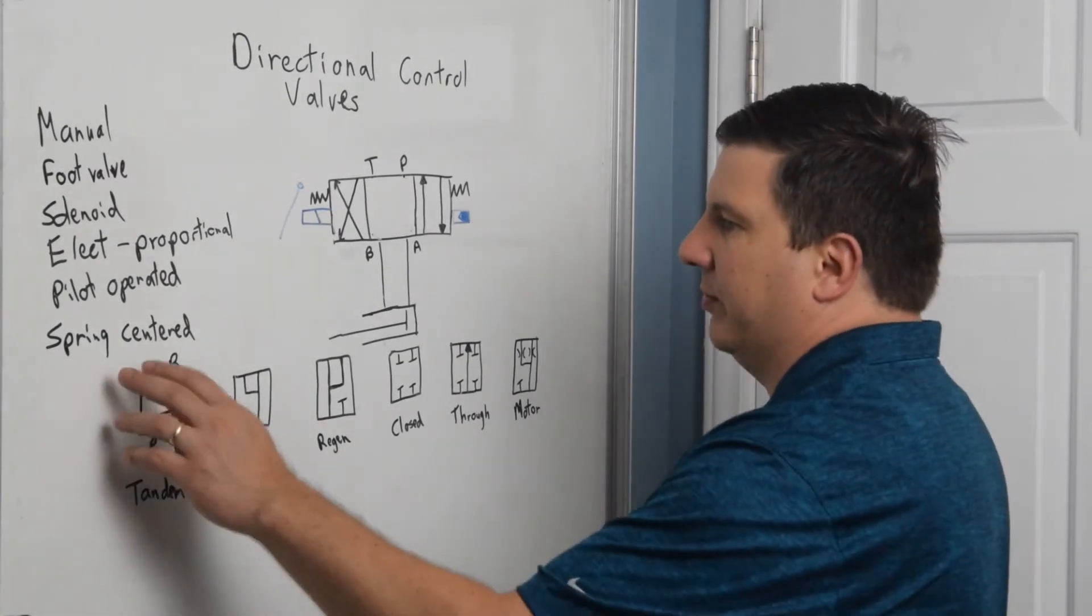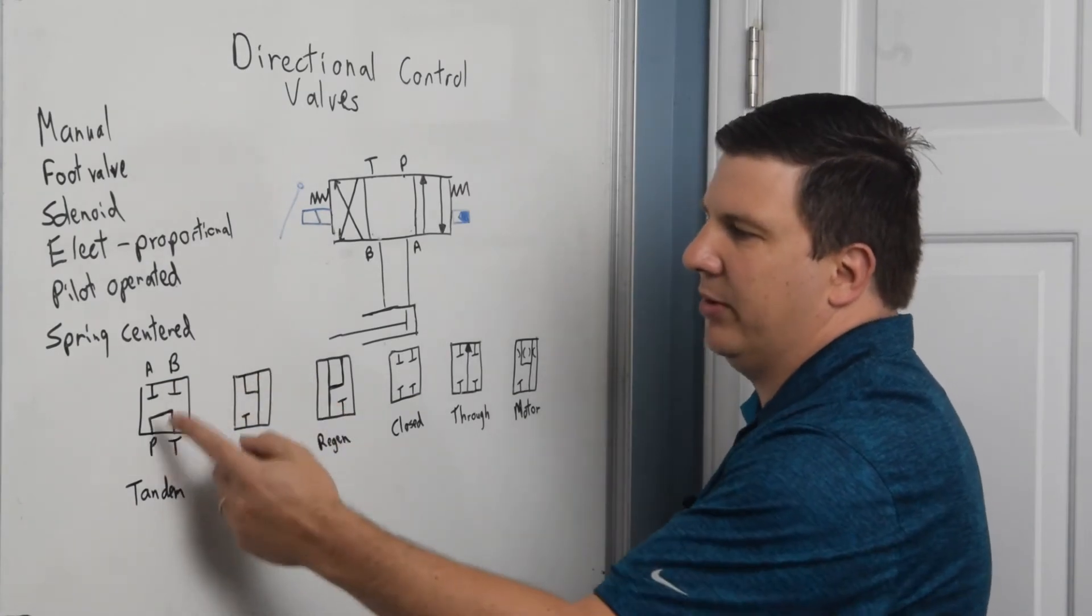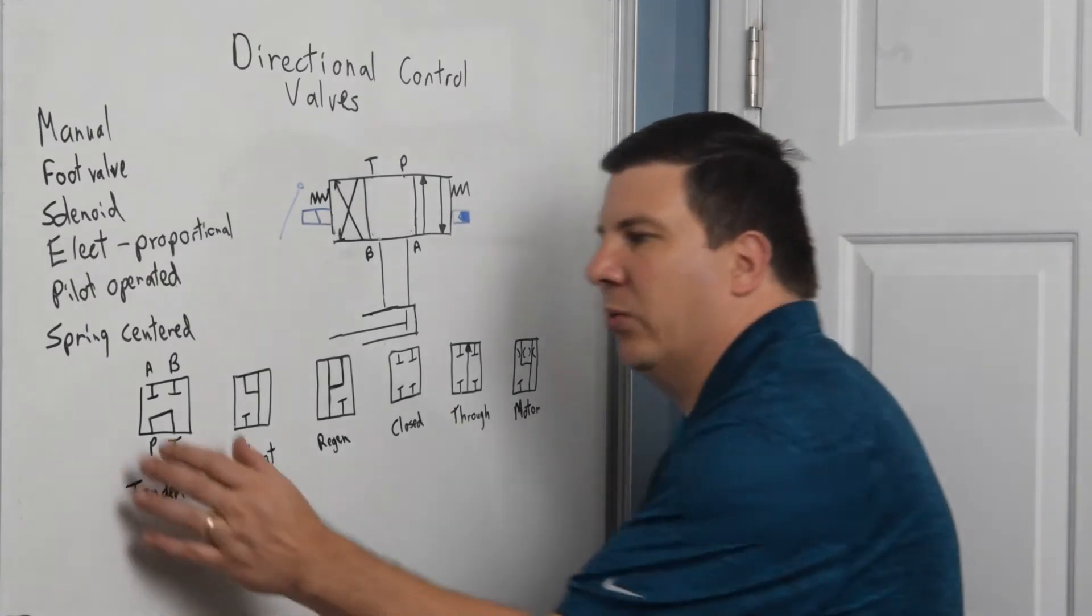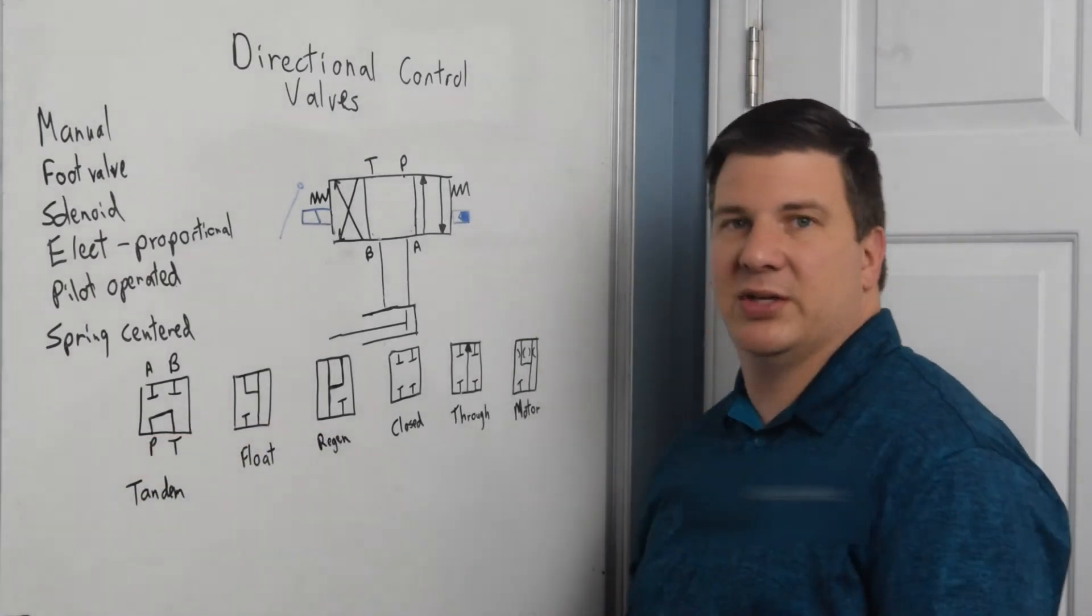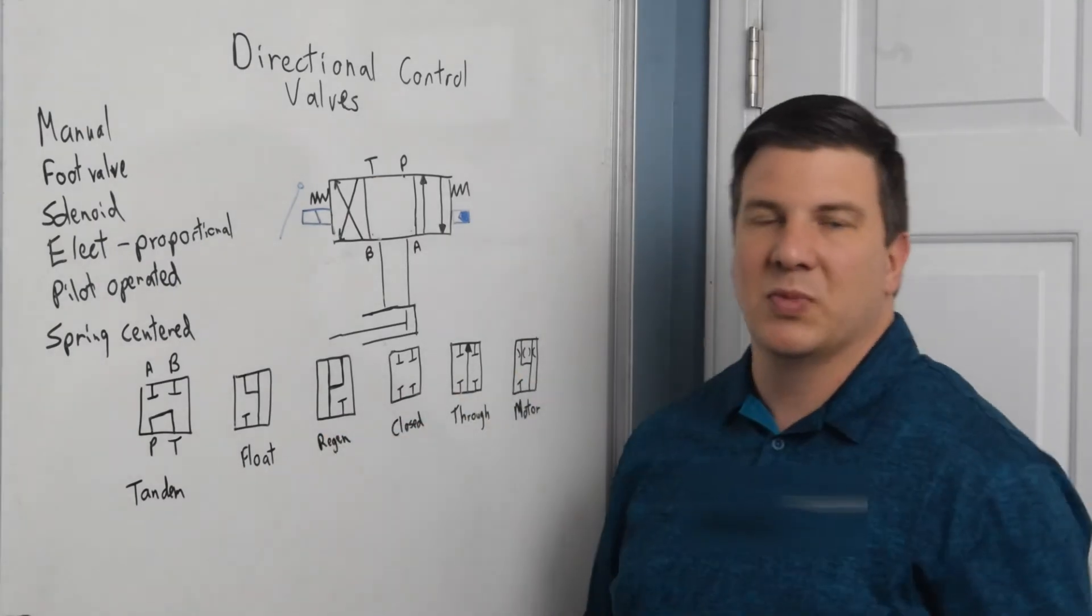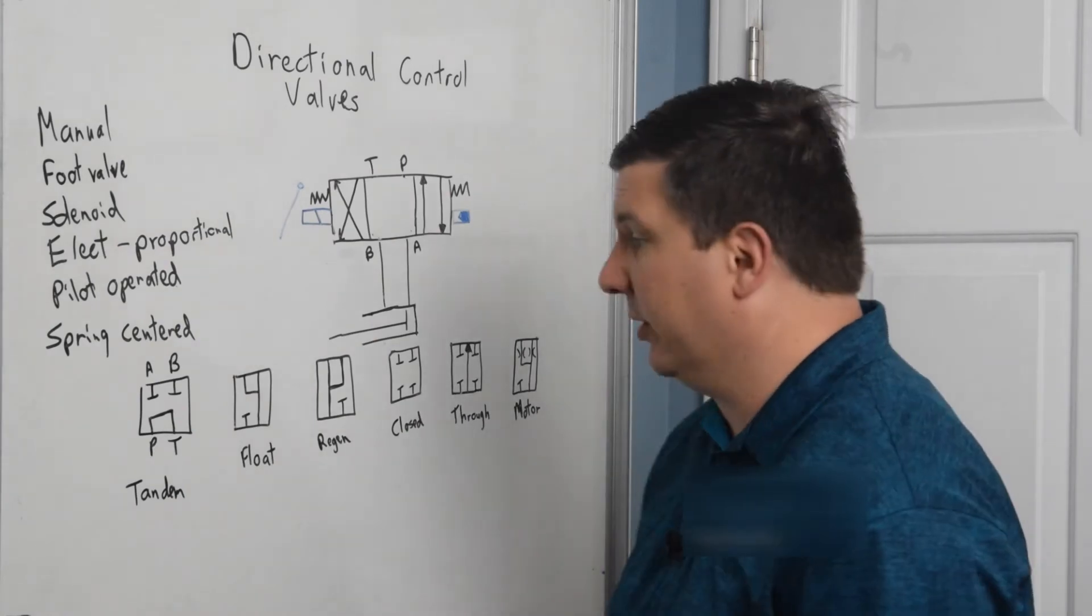Here are the most common. The first one is tandem. So if I want to do some minor load holding in A and B, I close them off and I run pressure to tank. Now the important thing about this is I don't want to run a bunch of, if I have an open center system, I don't want to put a bunch of tandem valves in a row. I want to do something else and we'll get to that in a little bit.